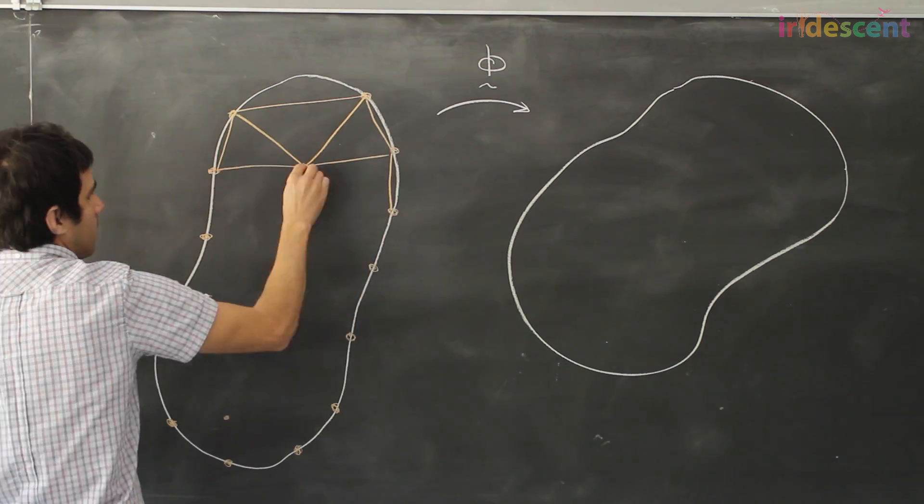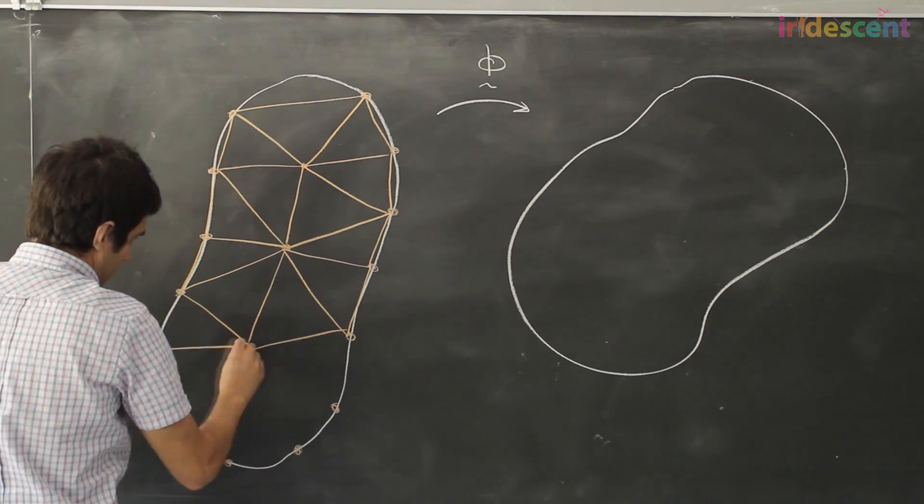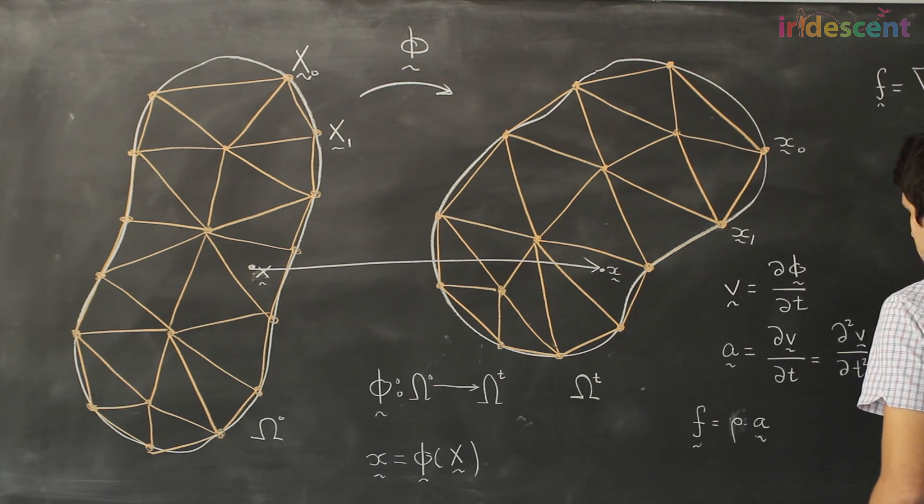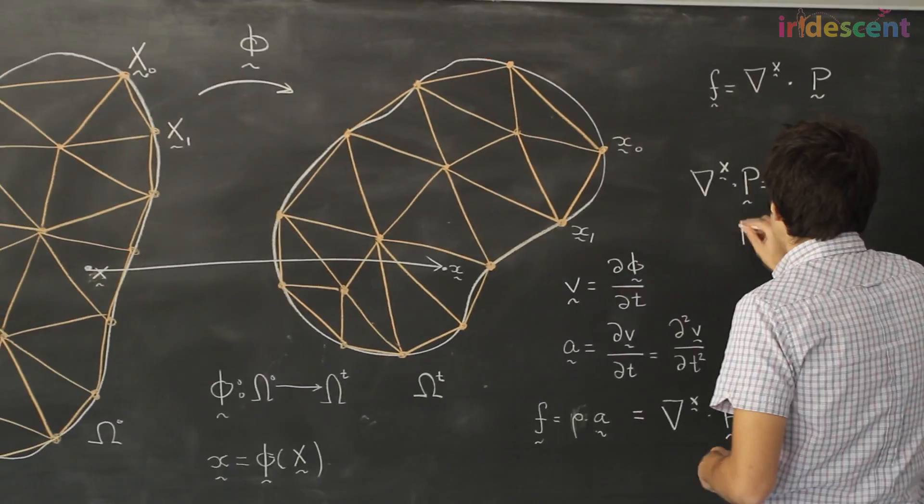Joseph uses simple physics, Newton's laws of motion, to understand how complex shapes of materials deform when you push, pull, or cut them.